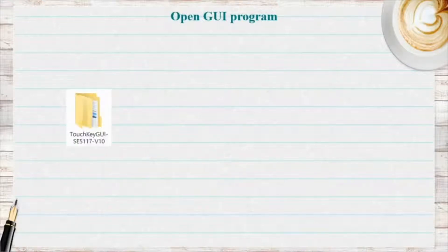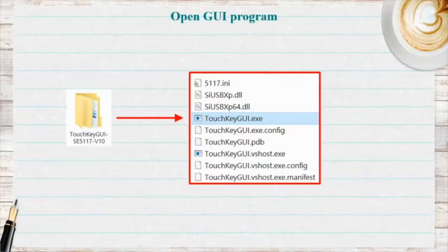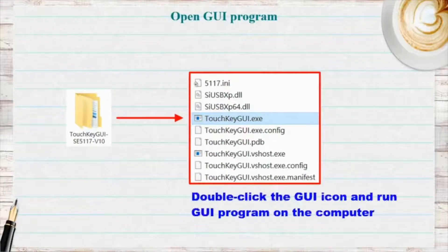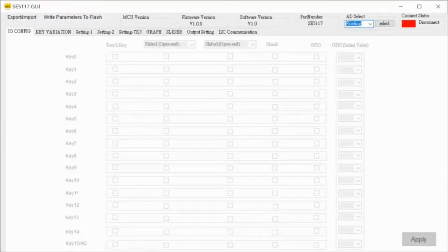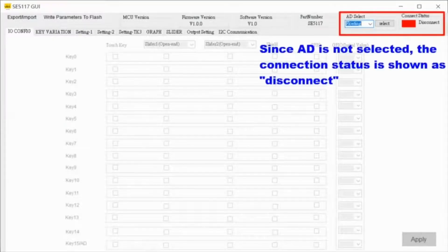Run the touchkey GUI executable. The same GUI will also be used for customer products. First, connect to the board by selecting the preset address option.